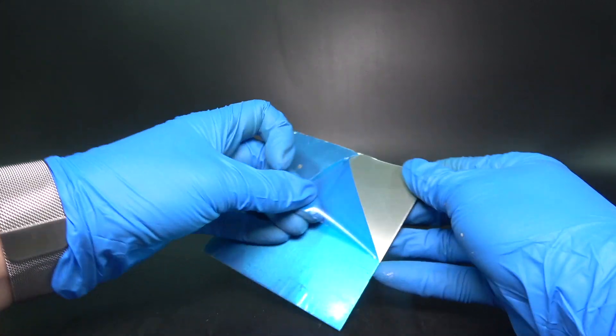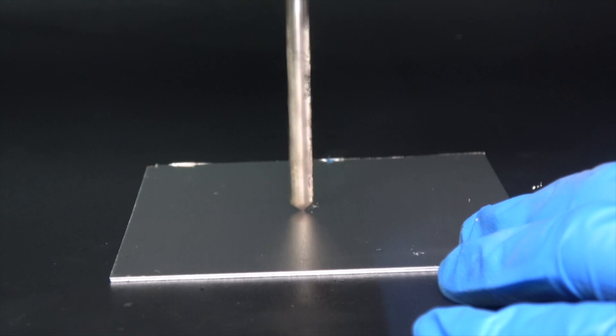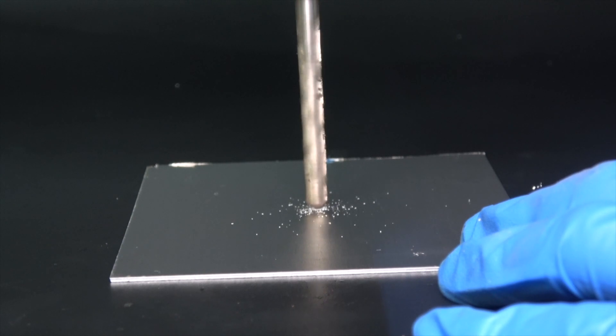Aluminum forms a compact layer of aluminum oxide on its surface, protecting itself from further oxidation. This oxide layer also prevents amalgamation from happening.